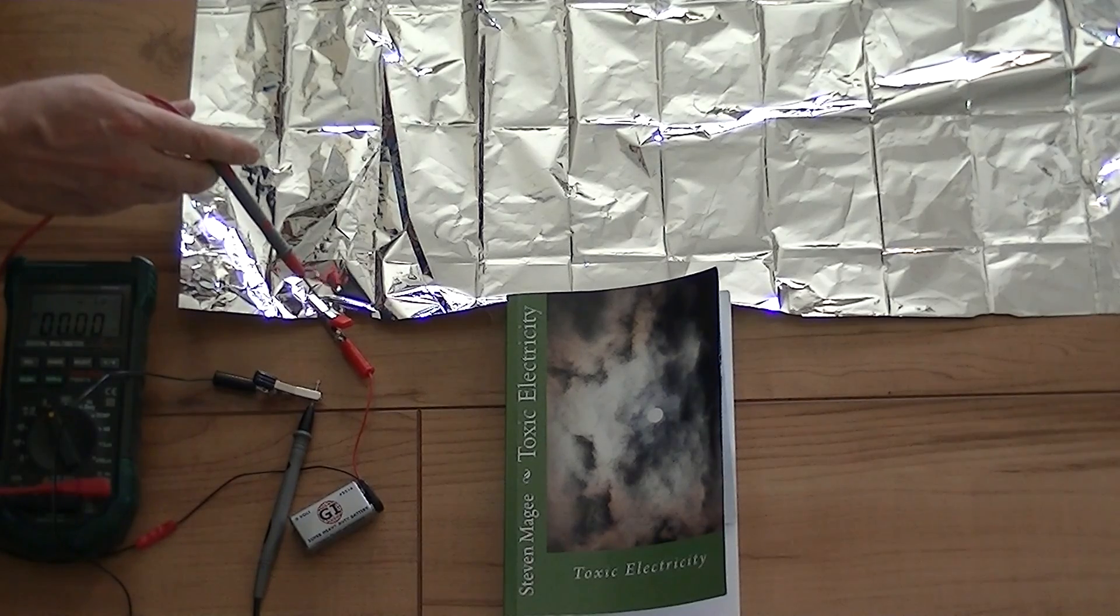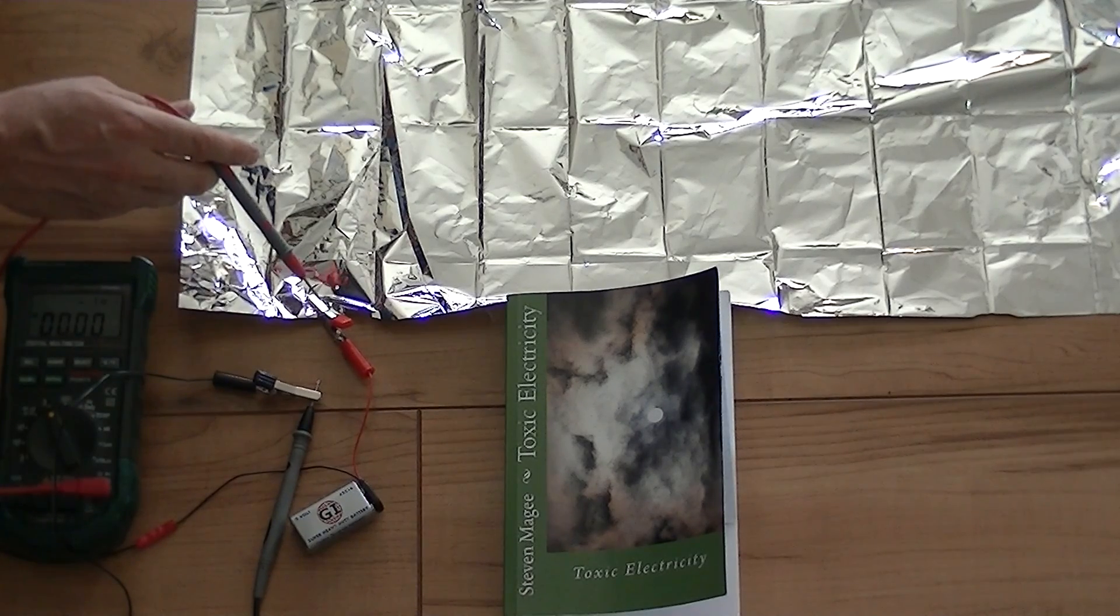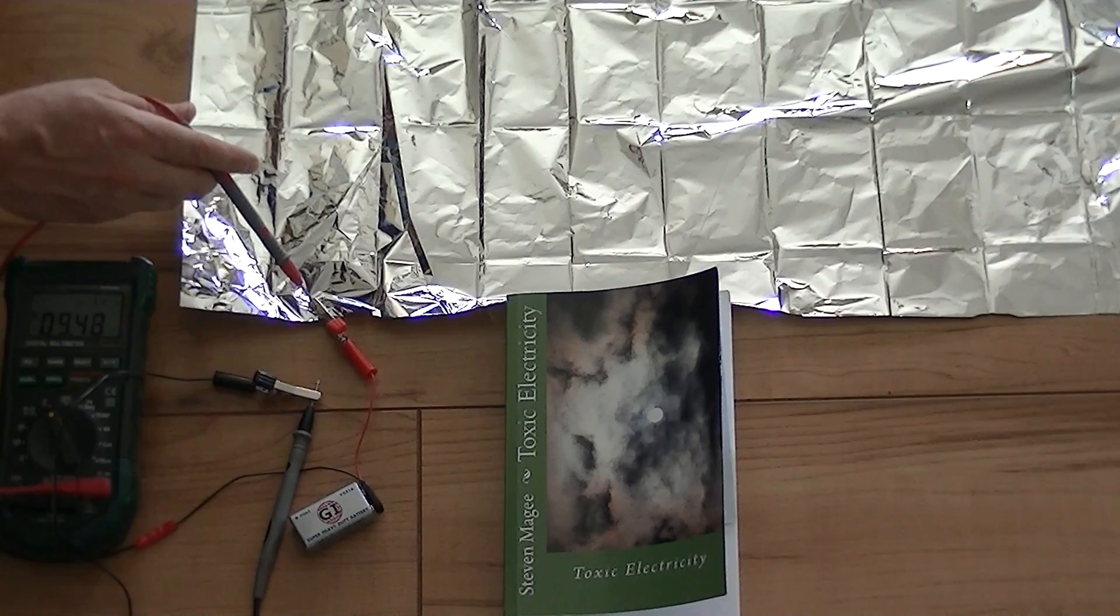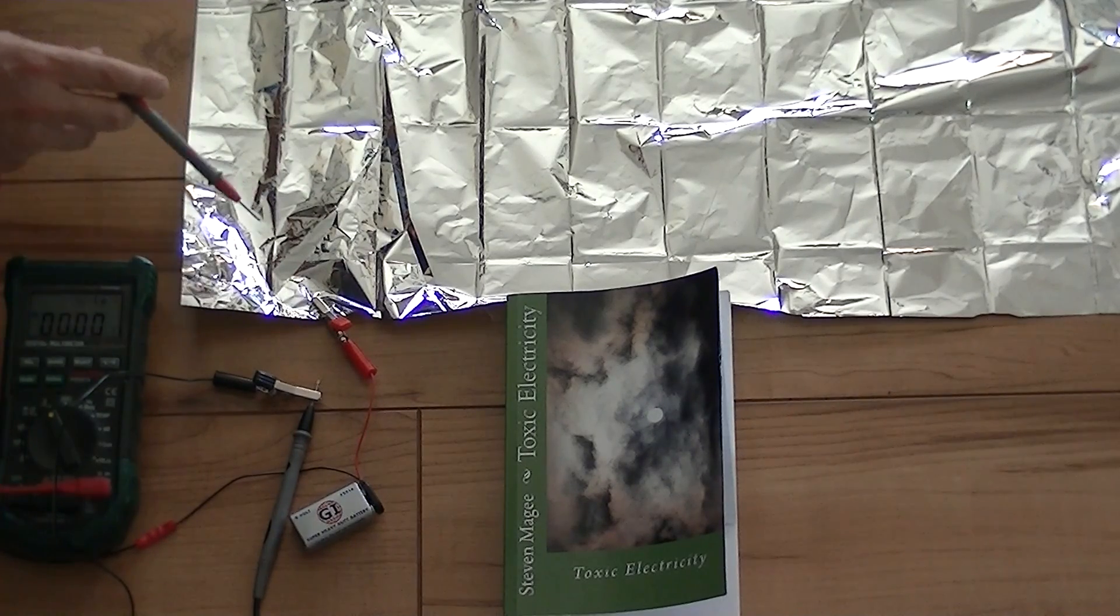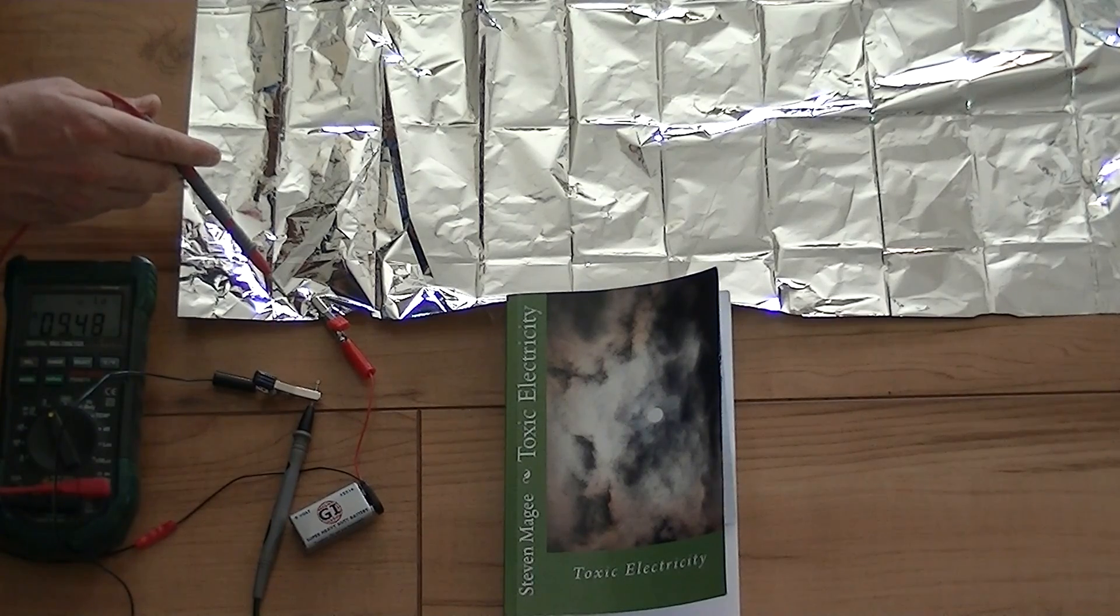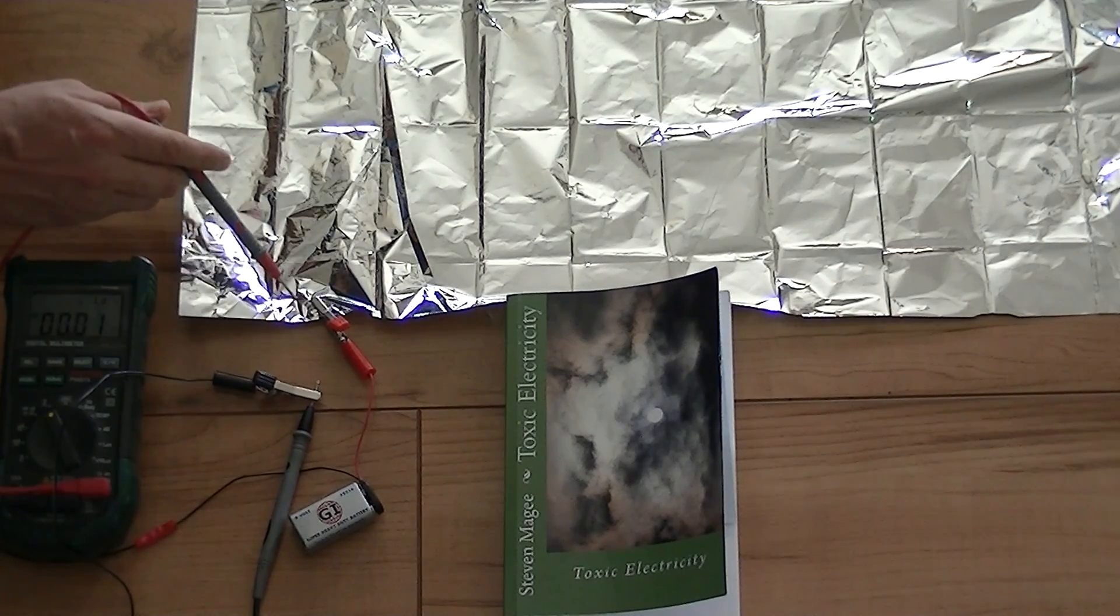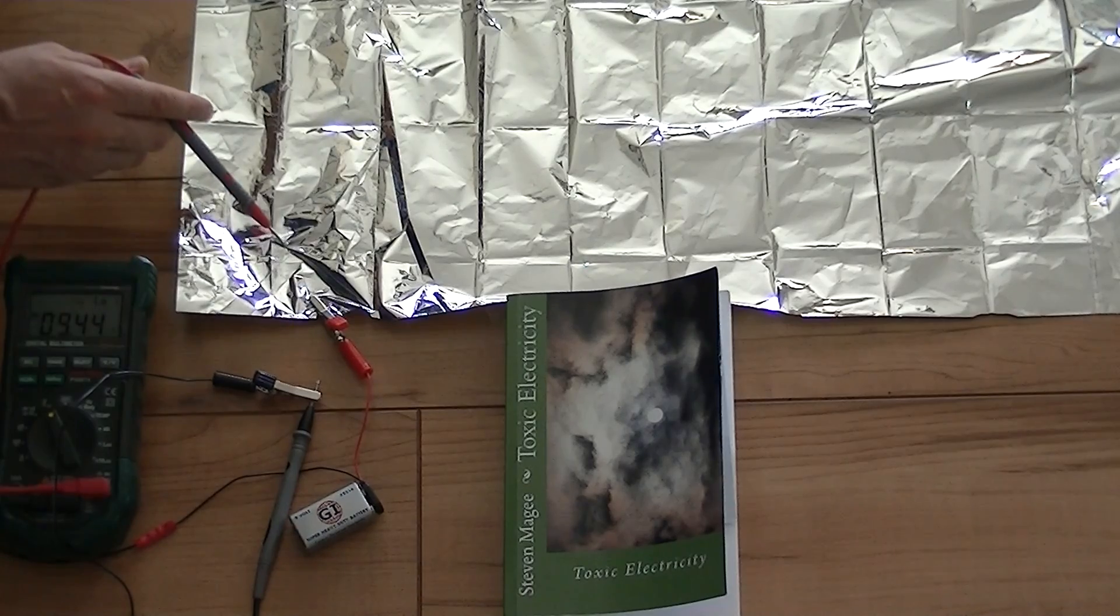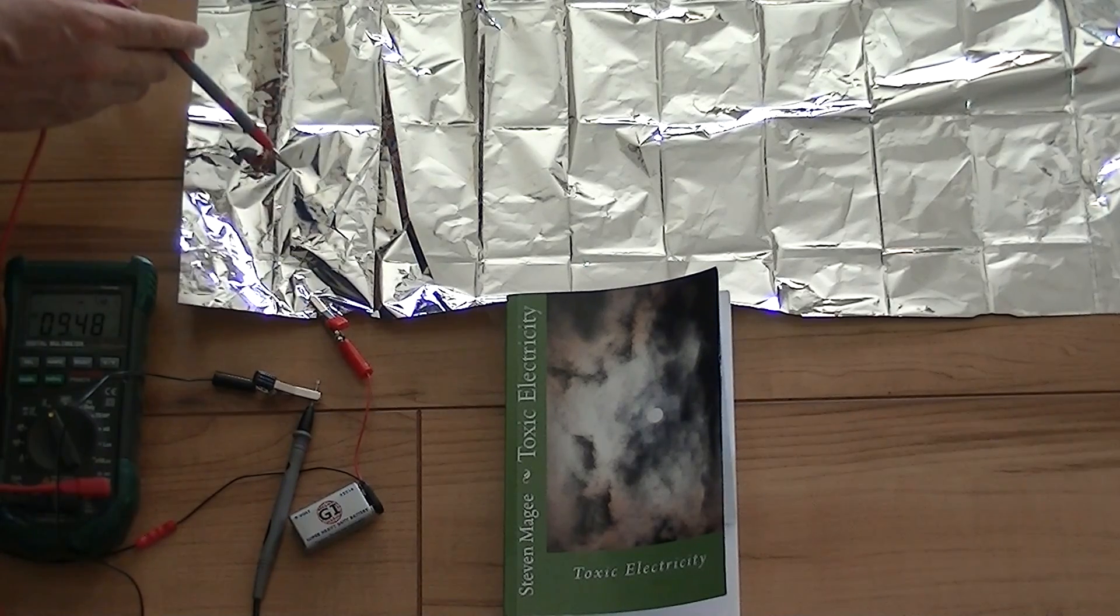I'm going to first touch it to the positive of the battery. As you can see, our battery has 9.48 volts on it, so we should have the same on the foil. Indeed, we have a very similar voltage on the foil. But the interesting thing is, the further you get away from the connection, the more that voltage drops on the foil.